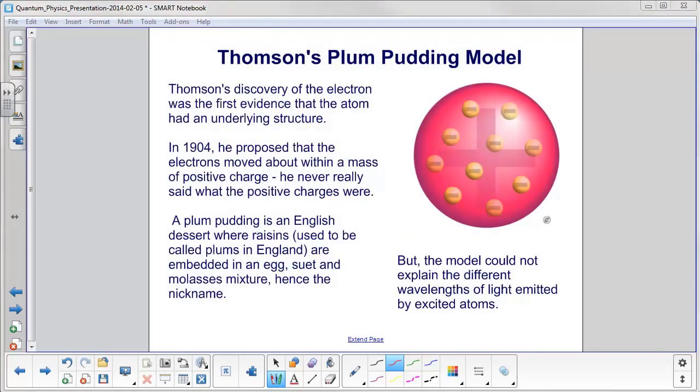Thompson's discovery of the electron was the first evidence that the atom had an underlying structure. So in 1904, he proposed that the electrons that he discovered, and here they are, you can see the electrons, the little negative charges here, are moving about within a mass of positive charge. You can see this positive sign here. He never really said what the positive charges were. It was just kind of this amorphous mass, and it was nicknamed the plum pudding model.